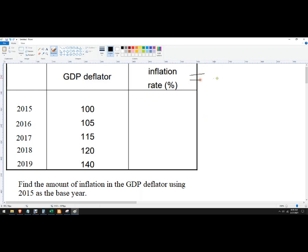So the inflation rate formula is the new value minus the old value divided by the old value, times a hundred because it's a percent.